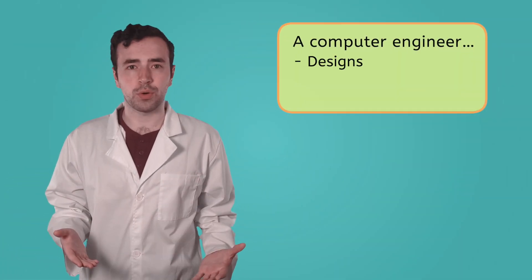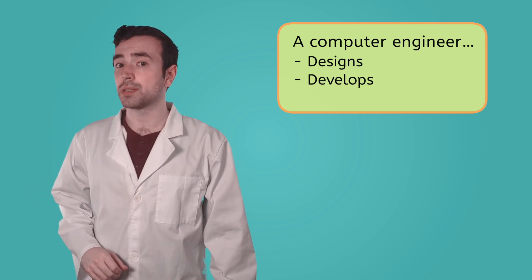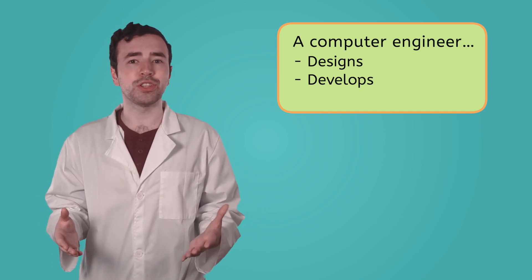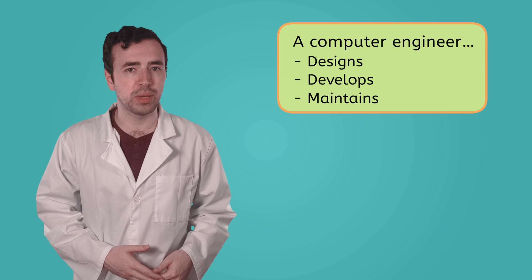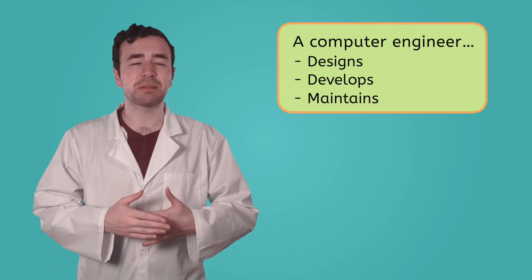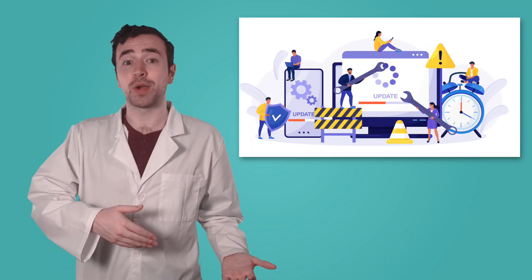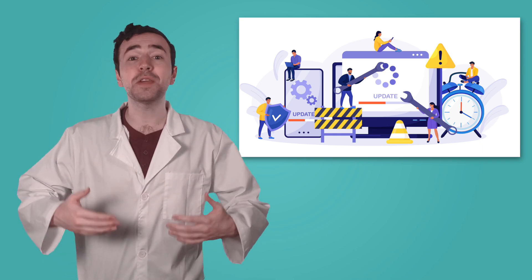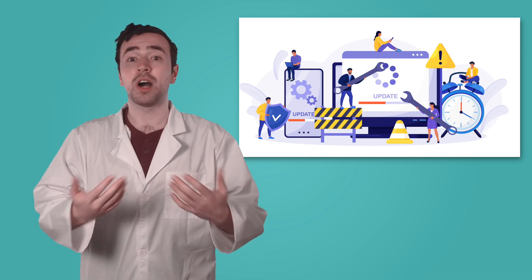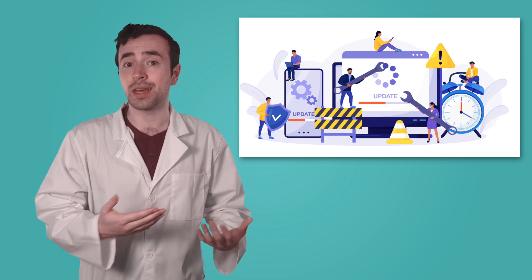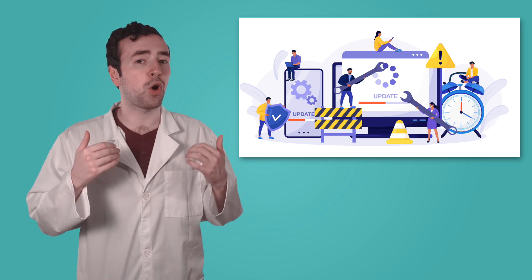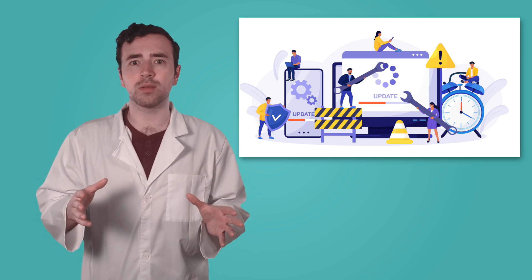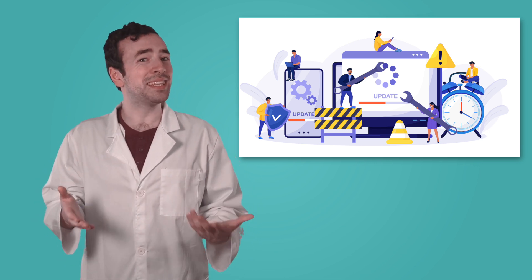A computer engineer designs a program, then develops all the algorithms that make up its code. But their work is not done yet. Even after the program is available to use, computer engineers still need to work to maintain what they've built. Maintaining a computer system is like taking care of a car. Just like how cars need regular oil changes and tune-ups, computer systems need regular updates and fixes to keep them running smoothly. This involves updating the software, fixing new bugs that might appear, and sometimes even upgrading the hardware to improve performance. Have you ever experienced a program freezing or crashing? It probably needed some maintenance.